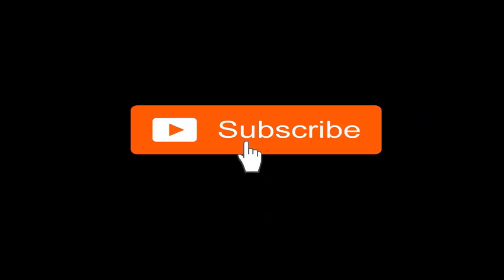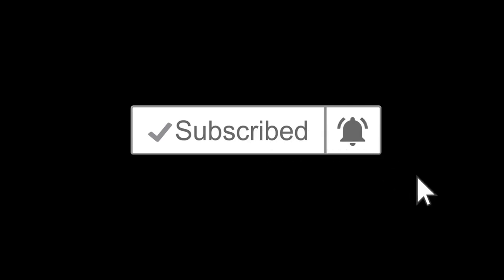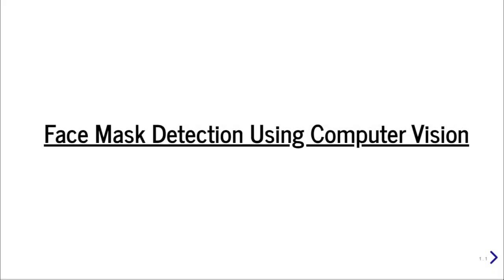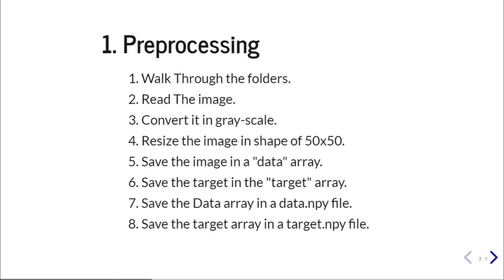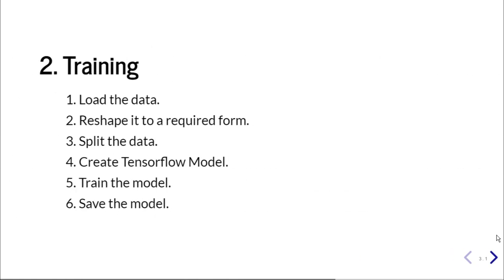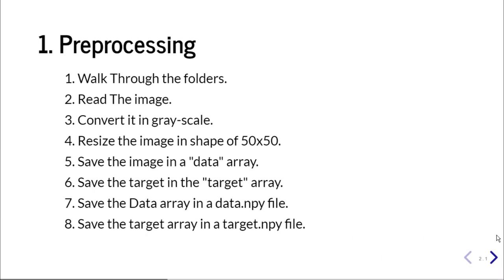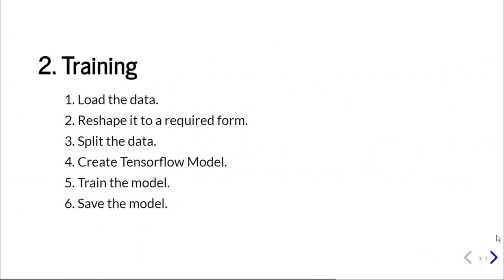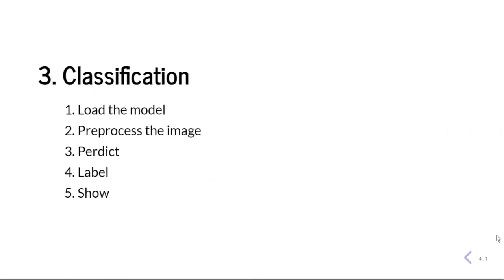If you have not yet subscribed, hit the subscribe button and also hit the notification bell icon so you don't miss any of our upcoming videos. Let's start working on our project. Our aim is to build a recognition model that can check whether a person is wearing a mask or not. We have three different stages: pre-processing, then training our model, and then classification.